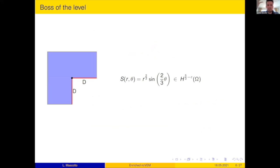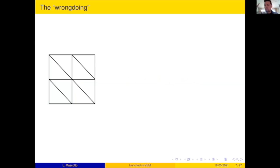Now, as an example, the boss of the level on the L-shaped domain. The strongest singularity is given by r to the two third times sine of two theta, which is not even H^2. We can play even harder. So we can take a slit domain with Dirichlet boundary conditions: r to the one half, which is not even H^(3/2). And we can play even harder: Dirichlet-Neumann boundary conditions and then r to the one fourth.